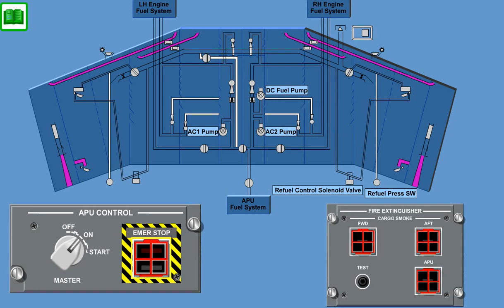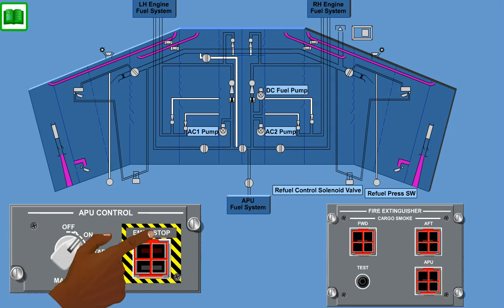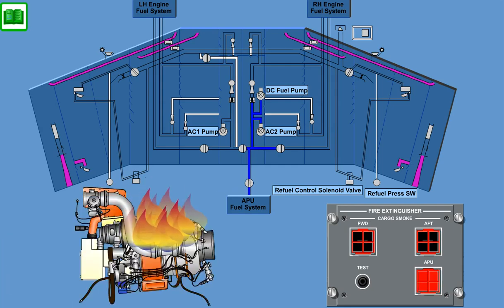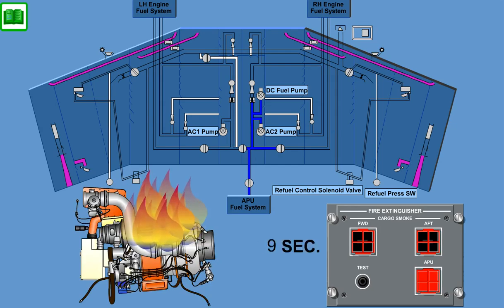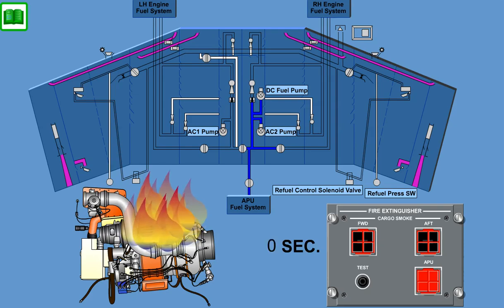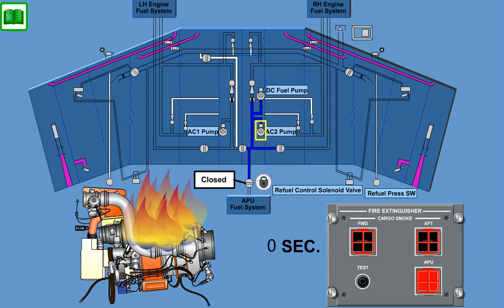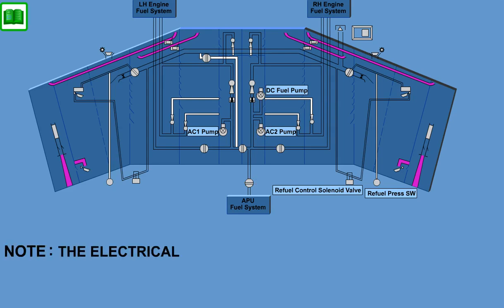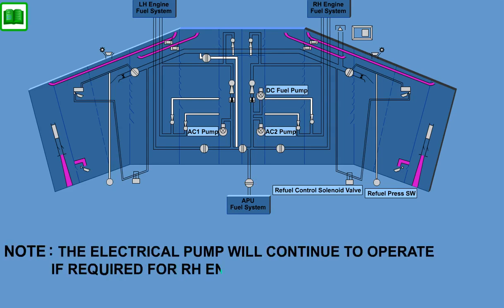The APU emergency stop and APU fire extinguisher switches override the valve commands from the APU master switch. If either of these push buttons is pressed, the shut-off valve is commanded closed. If a fire is detected in the APU compartment and the aircraft is on the ground, following a 10-second delay the APU will shut down automatically if there is no crew intervention. The APU feed shut-off valve will be closed and the right-hand AC auxiliary pump and DC start pump will be depowered. Note that the electric pump will continue to operate if required for right-hand engine operation.